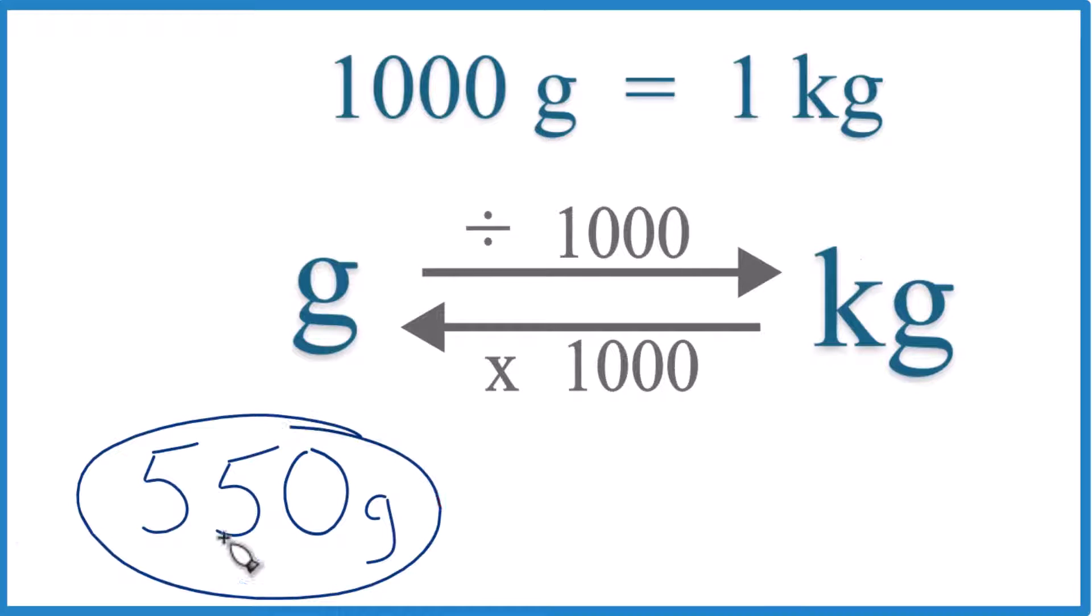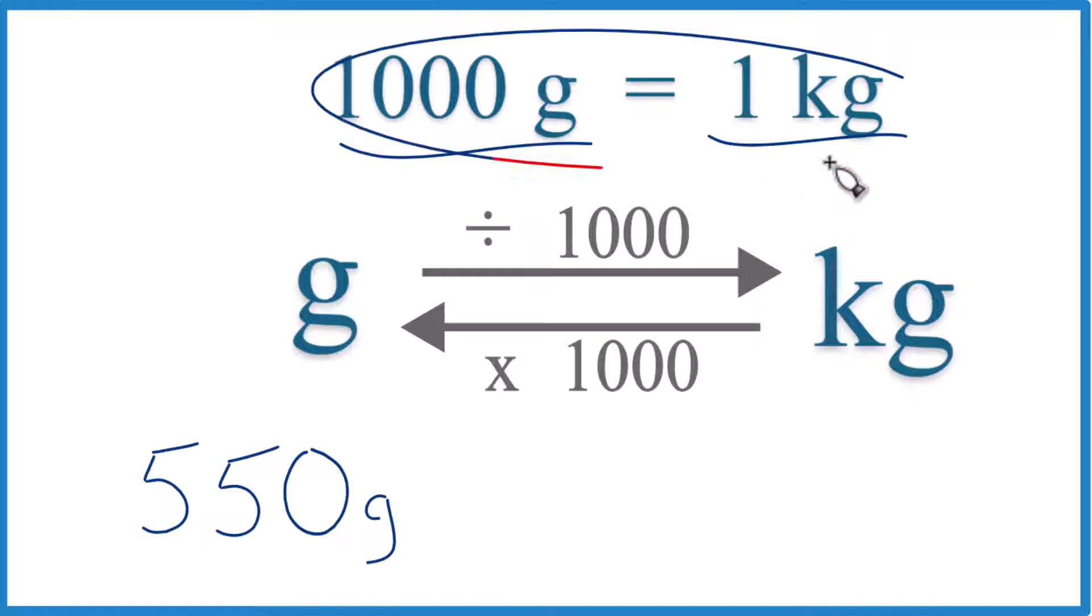If you're asked to convert 550 grams to kilograms, here's how you do it. You need to memorize that 1,000 grams equals 1 kilogram. This is a conversion factor, so we can use that to figure this out.